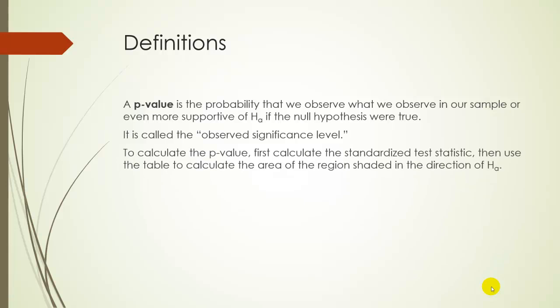In order for us to calculate the p-value, we must first calculate the standardized test statistic, the z-value that you saw in the last week. Then use the table to calculate the area of the region shaded in the same direction as HA. So if it's a right-tailed test, you shade to the right. If it's a left-tailed test, you shade to the left. And if it's a two-tailed test, you're actually just going to double the area in the direction of the tail. You'll see that in a moment, in maybe about 10 minutes.